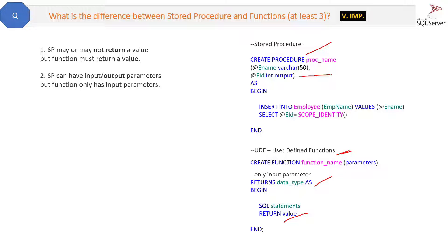The second difference is: a stored procedure can have both input and output parameters, but a function can have only input parameters. Output parameters are not possible in a function — only input parameters are available in a function.